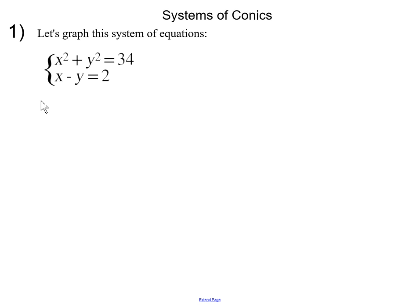So how do we determine the number of possible solutions for systems of conics? We could graph, or we could even sketch a graph of each equation. Can you take a guess as to the number of solutions in this system?